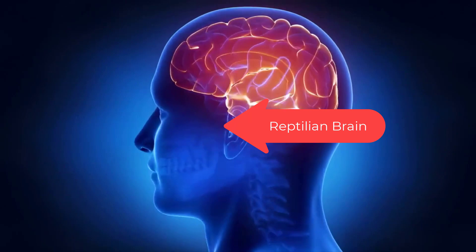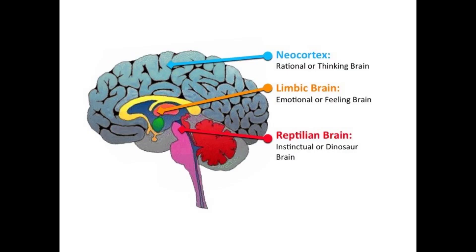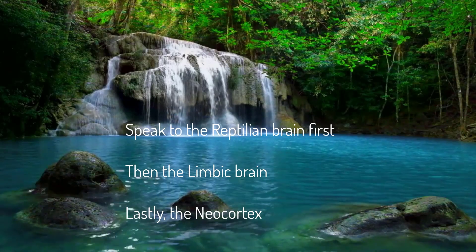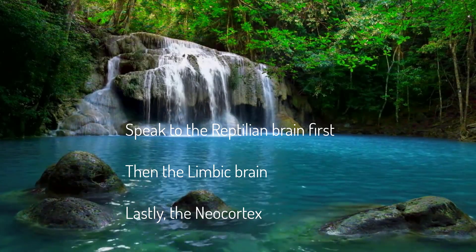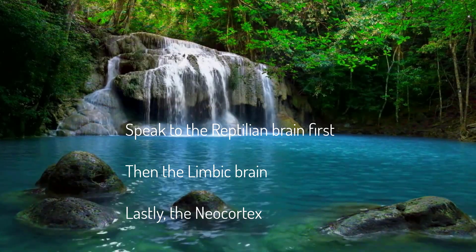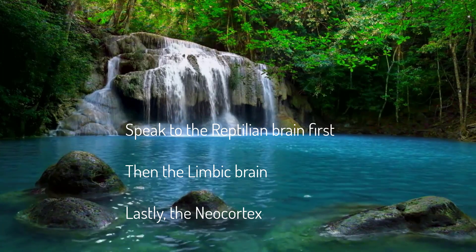The reptilian brain is visual and hardwired into the brain stem. This brain can make survival decisions before you or the other brains can even begin to process the data.